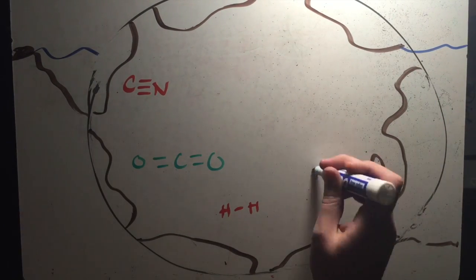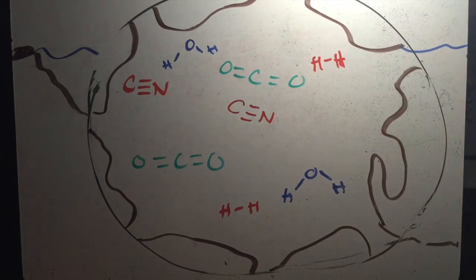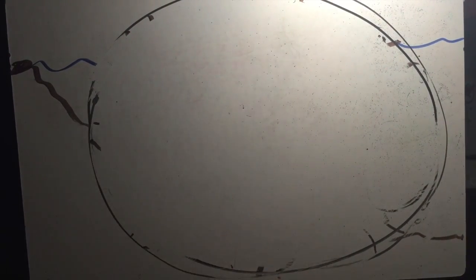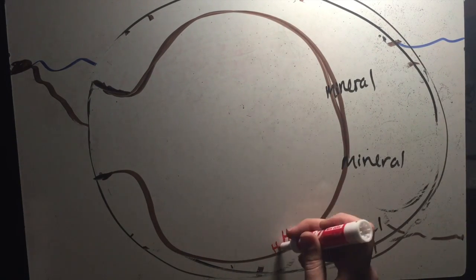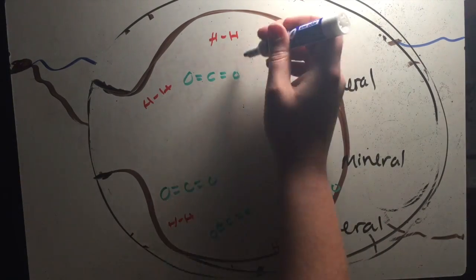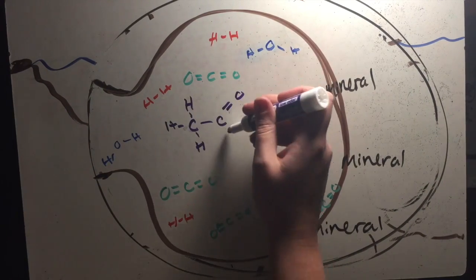Inside the vents, the same simple molecules were present that were present in the prebiotic soup model. Here, the minerals in the vent catalyzed many spontaneous reactions between these simple molecules, creating more complex molecules. In even smaller chambers in the vents, the minerals continued to catalyze reactions between the simple molecules. But because of the high heat and pressure in the vents, the products of these reactions reacted again to form even more complex molecules like acetic acid, methane, and ribose.